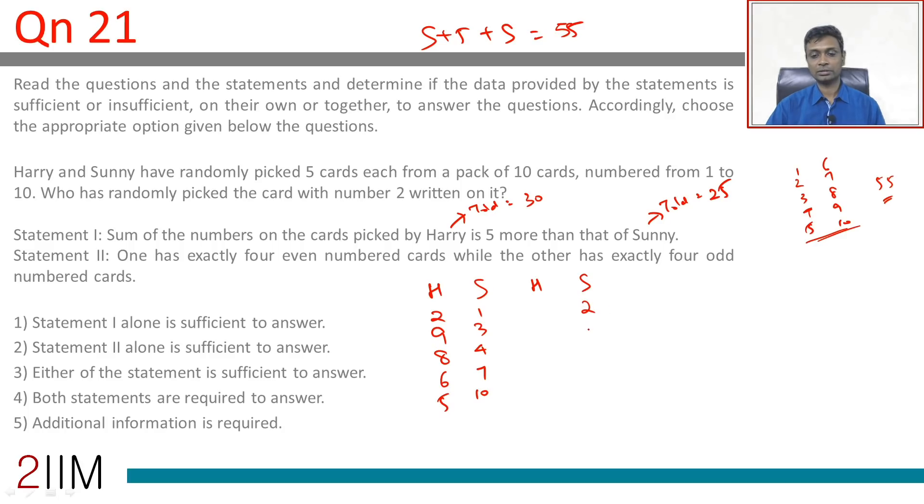Now we're going to put Sonny to have 2. Then put, say, 7, 8, which add up to 15 plus 2 is 17, then 3, 5 is 20, 25. Harry has 1, 4, 6, 9, 10, adding up to 10, 20, 30. Both are possible.